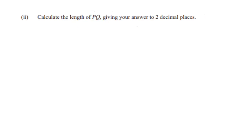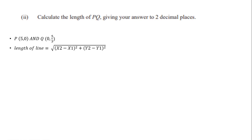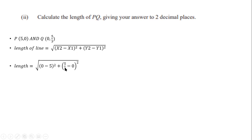Part 2 says calculate the length of PQ giving your answer to two decimal places. We have P(5, 0) and Q(0, 5/3). This is our (x1, y1) value and (x2, y2) value. The formula for the length of a line is the square root of (x2 − x1)² + (y2 − y1)². Replacing these values: x2 = 0, y2 = 5/3, x1 = 5, y1 = 0.